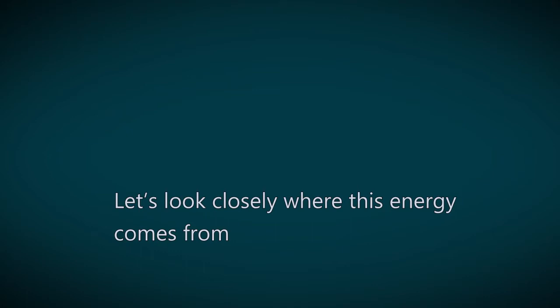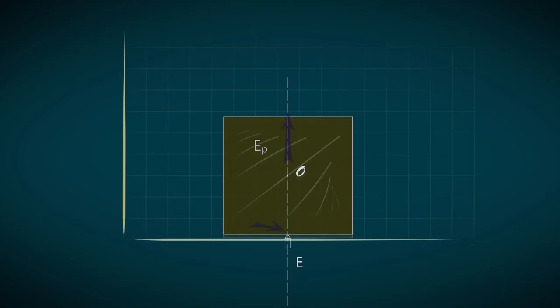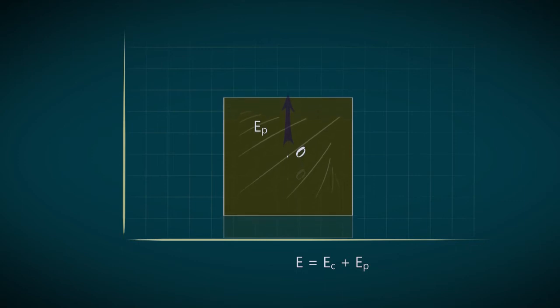Let's look closely at where this energy comes from. In the first experiment, the bullet hits the target in the middle. Kinetic energy of the bullet is decomposed into kinetic energy of the block and energy absorbed by the block's deformation.